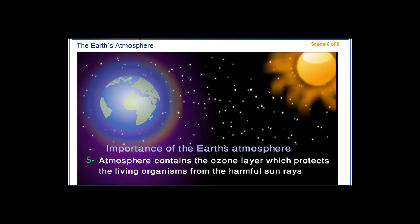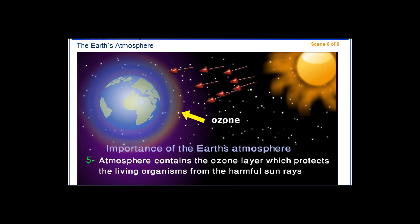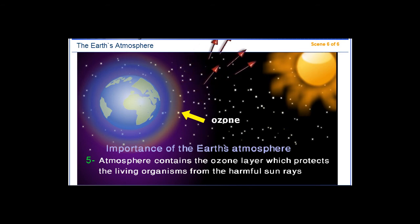5. The atmosphere contains the ozone layer, which protects living organisms from harmful sun rays.